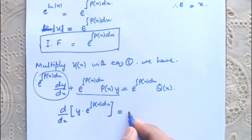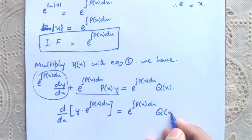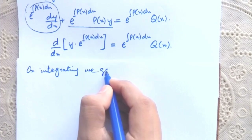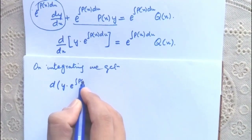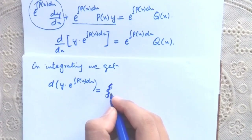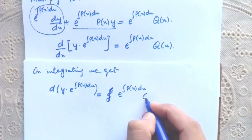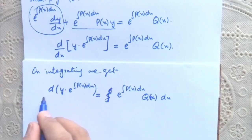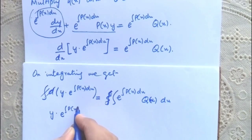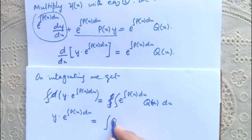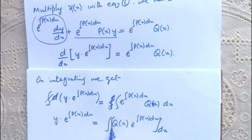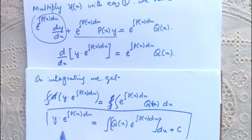So we have d/dx[y · e^(∫P(x)dx)] = e^(∫P(x)dx) · Q(x). On integrating both sides, y · e^(∫P(x)dx) = ∫Q(x) · e^(∫P(x)dx) dx + C. This is the general solution of equation 1.